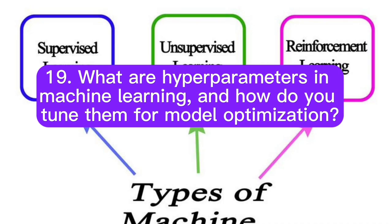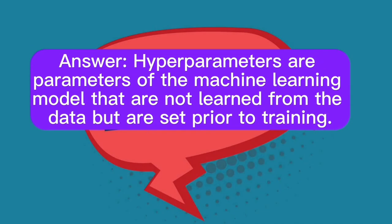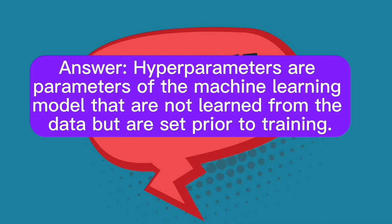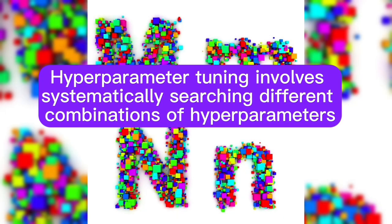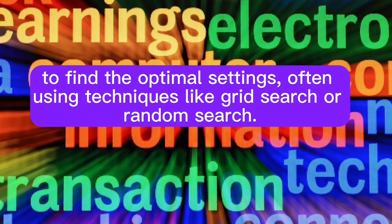Question 19: What are hyperparameters in machine learning, and how do you tune them for model optimization? Answer: Hyperparameters are parameters of the machine learning model that are not learned from the data but are set prior to training. Hyperparameter tuning involves systematically searching different combinations of hyperparameters to find the optimal settings, often using techniques like grid search or random search.